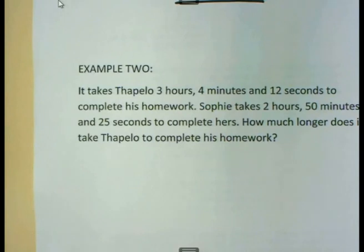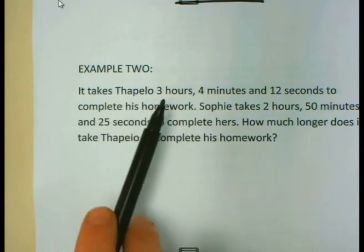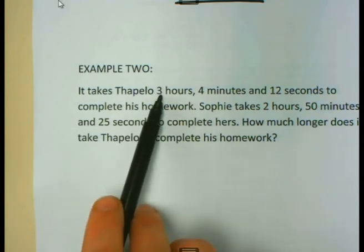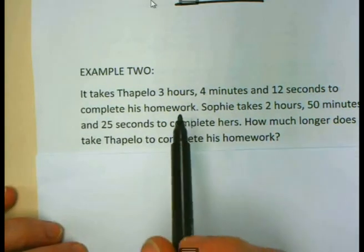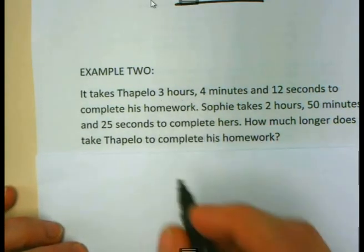It takes Tapelo 3 hours, 4 minutes and 12 seconds to complete his homework. Sophie takes 2 hours, 50 minutes and 25 seconds to complete hers. How much longer does it take Tapelo to complete his homework? If you compare, you will see that Tapelo takes 3 hours, Sophie 2 hours. Let us take the longer time and we write it first.